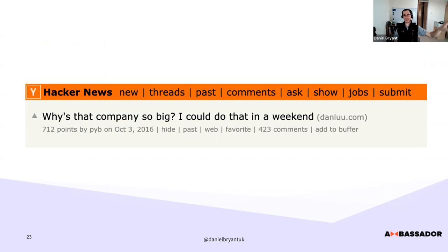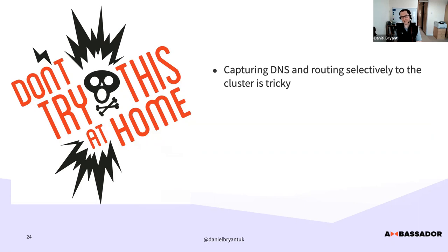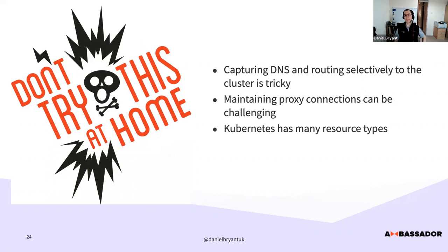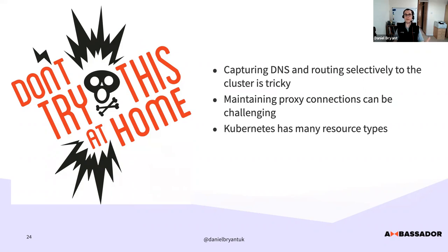The 'don't try this at home' caveat: capturing DNS and routing selectively is really hard. People say 'it's just a proxy, just Envoy in the cluster, I could code this in a weekend' — and you're kind of right, but maintaining proxy connections is really challenging. The team — Thomas, Luke, Donny, and others — are real wizards with DNS and tunneling. Telepresence supports intercepting deployments, replica sets, and stateful sets, all subtly different. No two laptops or clusters are alike, and the community is squashing issues and contributing patches. It's a CNCF project so there are many eyes on it.